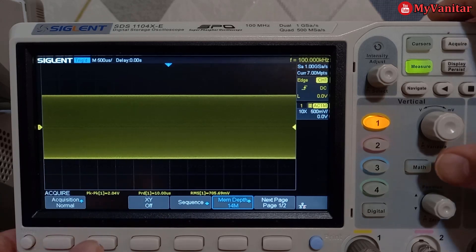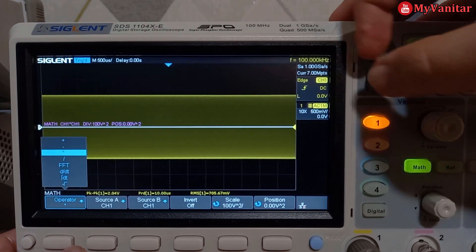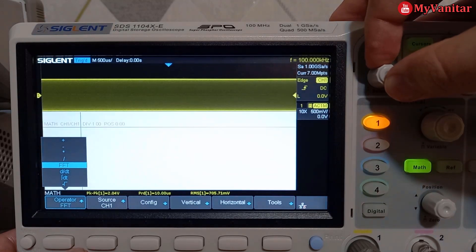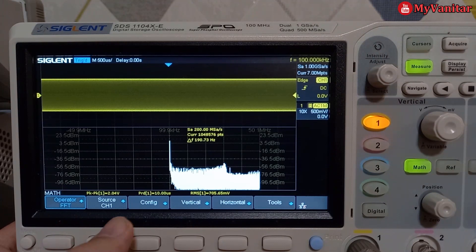So press the math function and from the operator select FFT. There we go. Because I prefer an exclusive screen, so I just press config.